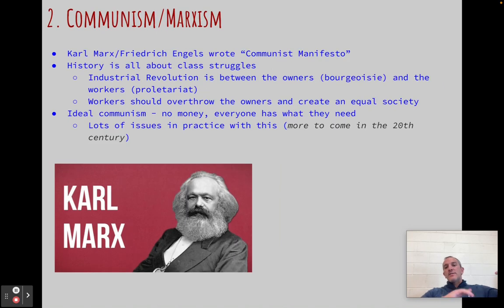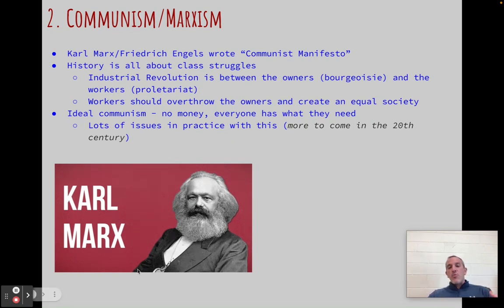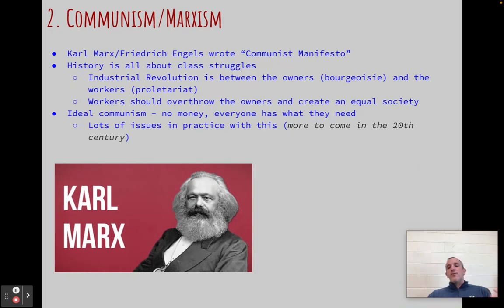There's another guy who has a totally different take on it, and his name is Karl Marx. There's a lot on this slide, so I apologize. This is also known as Marxism or communism. It was Karl Marx and Friedrich Engels — they're from Germany. They write a pamphlet called The Communist Manifesto — a manifesto just details and explains things. This is what they believe and their theory.